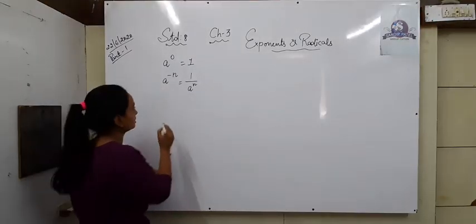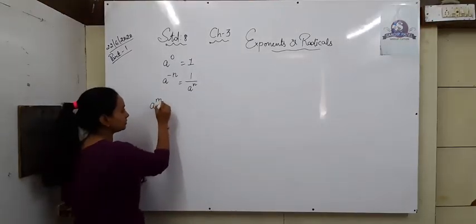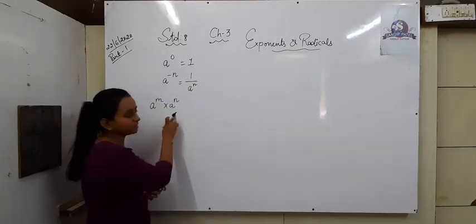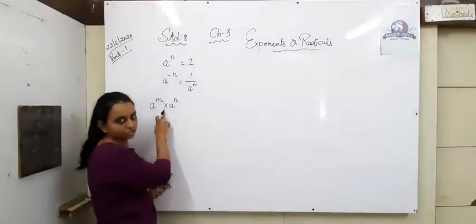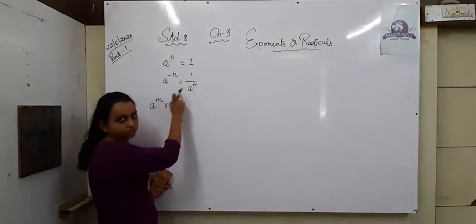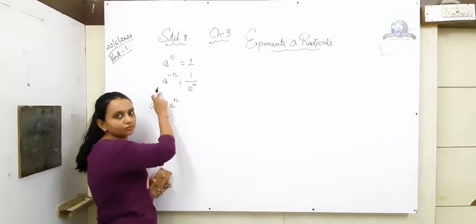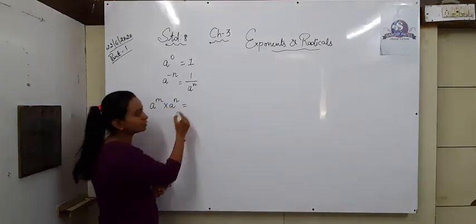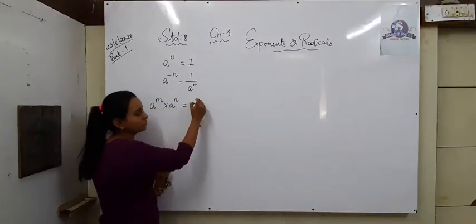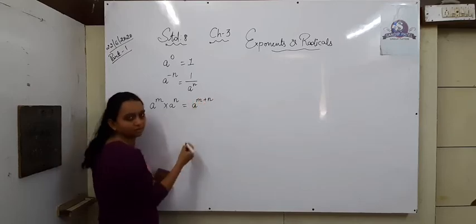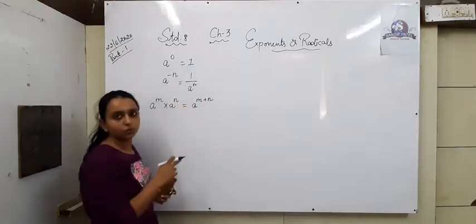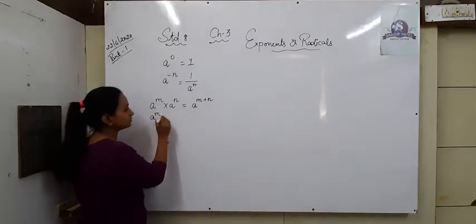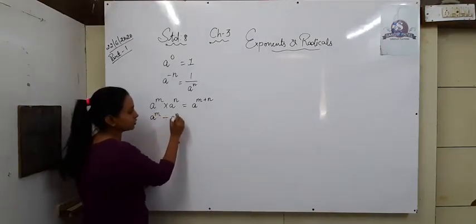After that, A raised to m multiplied by A raised to n. When these two numbers have multiplication between them, the numbers are the same but powers are different. Then what you will do? A raised to m plus n. Means when the powers are two, what will happen? Addition. So when multiplication sign is there, powers get added.